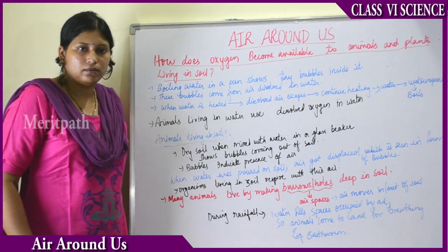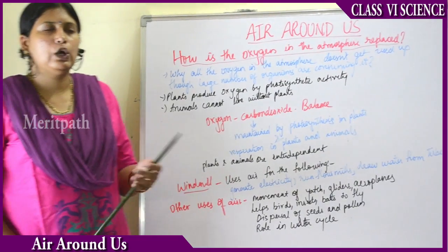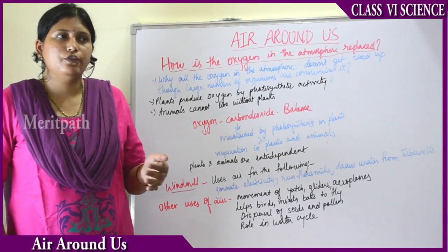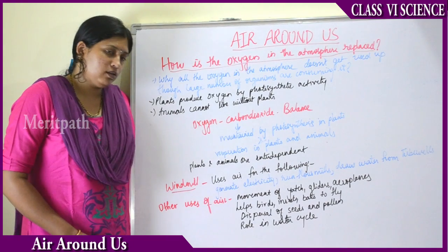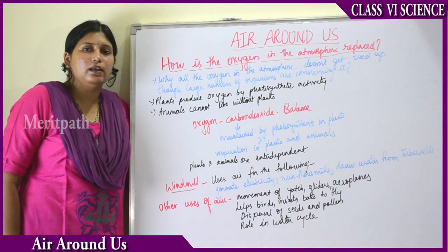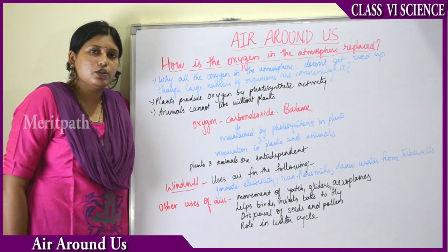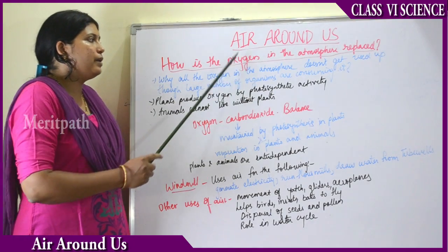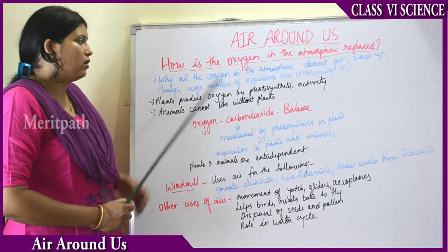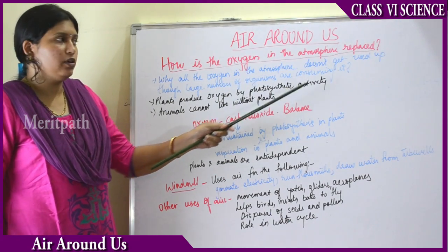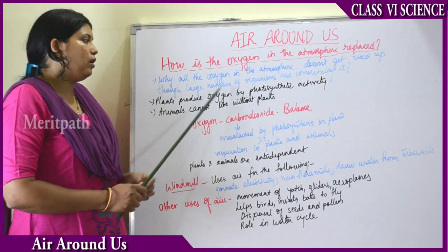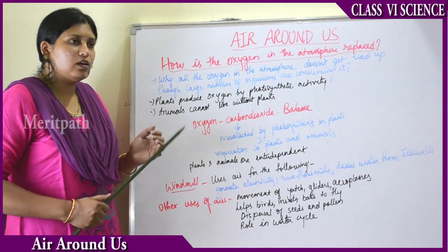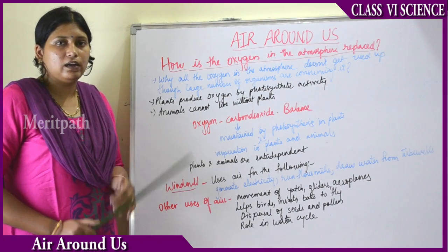All organisms — human beings, plants, animals, and microorganisms — use oxygen daily. Even so, the oxygen content in the atmosphere is not being completely consumed. Why is all the oxygen in the atmosphere not getting used up even though large numbers of organisms are consuming it daily?